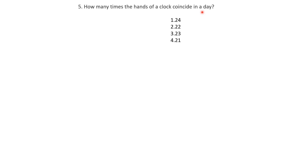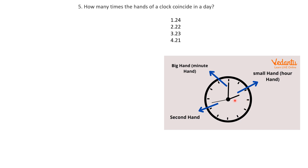Next question: how many times do the hands of a clock coincide in a day? You should know the minute hand, hour hand, and second hand. One might think the hands coincide every 60 minutes, but that is not true. The hands of a clock coincide every 65 minutes, not every 60 minutes.